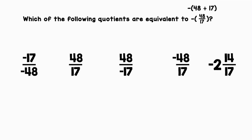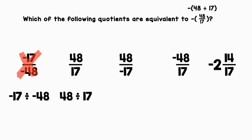Let's look at the leftmost option: negative 17 over negative 48. That can be rewritten as negative 17 divided by negative 48. A negative divided by a negative gives a positive quotient, so we already know it's not equivalent — let's cross that out. Next, 48 over 17 can be rewritten as 48 divided by 17. A positive divided by a positive gives a positive quotient, and we need a negative one — so we cross this one out as well.